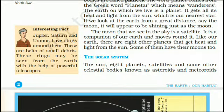If we look at the Earth from a great distance — say the moon — it will appear to be shining just as the moon shines. The moon that we see in the sky is a satellite. It is a companion of our Earth and moves around it. Like our Earth, there are eight other planets that get heat and light from the sun. Some of them have their moons too.